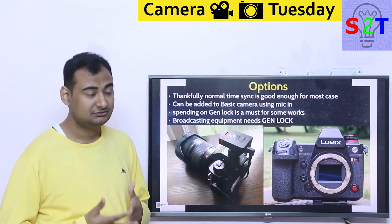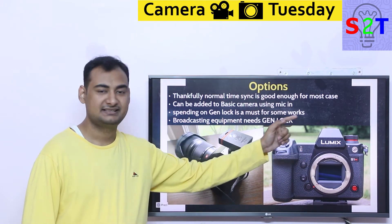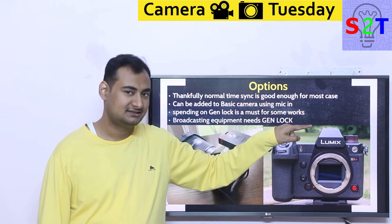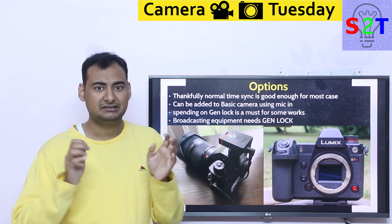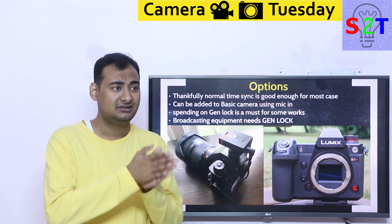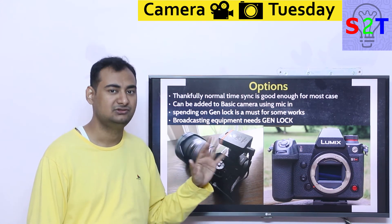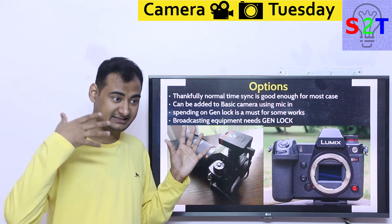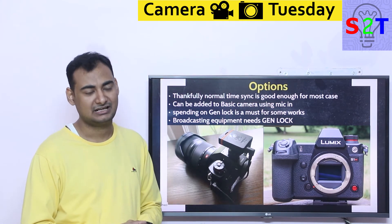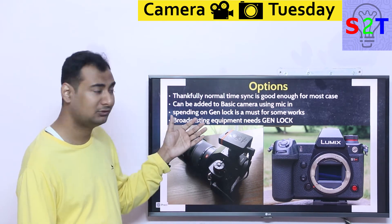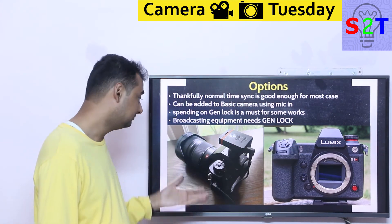Thankfully, normal time code sync is more than good enough for most cases. That's why the Lumix S1H is on the Netflix approved camera list as the only mirrorless — its flash port can be utilized as a time code system, not genlock, but just time code. That's more than good enough because in TV shows and movies, each take is very short — a few seconds to a few minutes, never three hours. That's why the Sony A7S3 is not accepted, even though it shares the same sensor and video format as other approved cameras. The primary reason is most of them have time code.